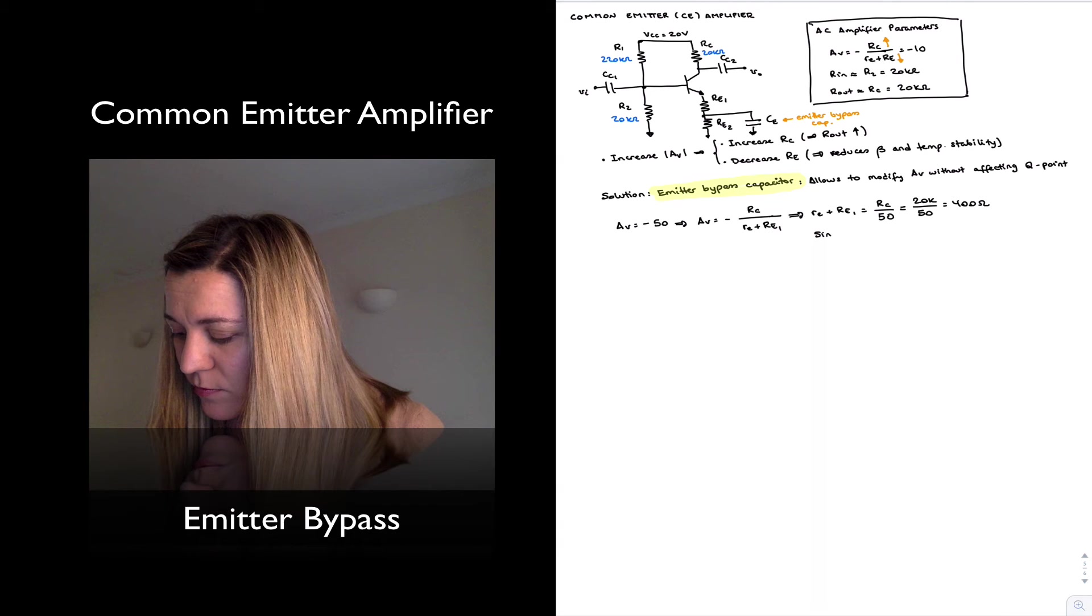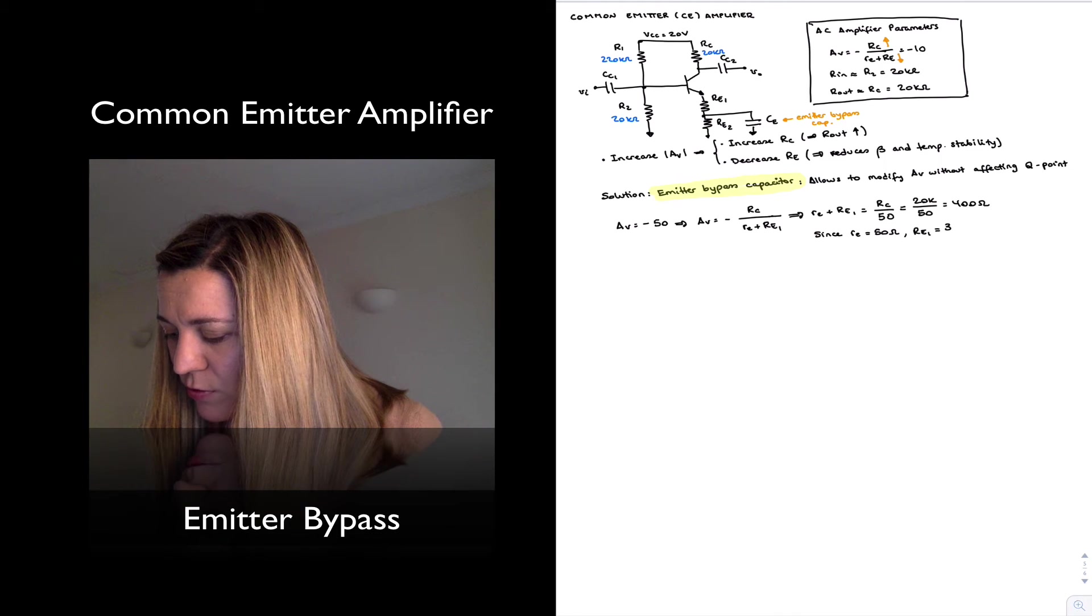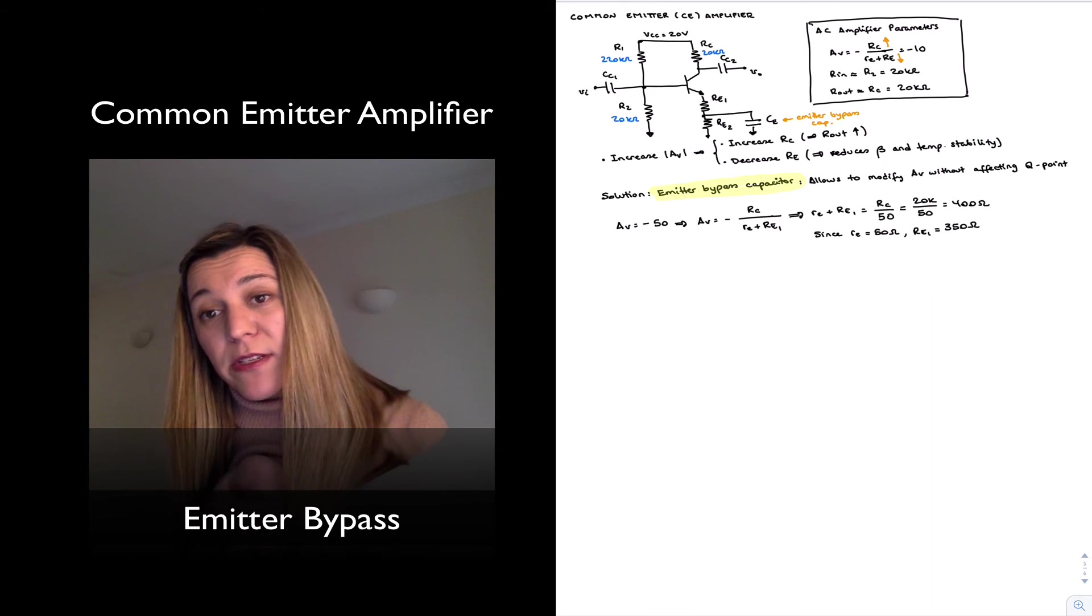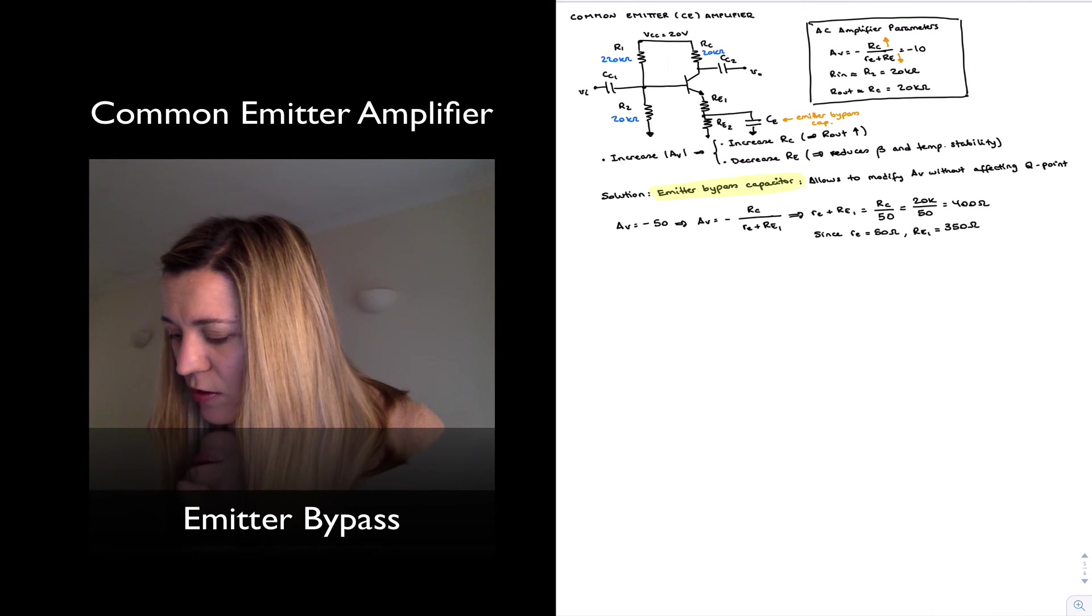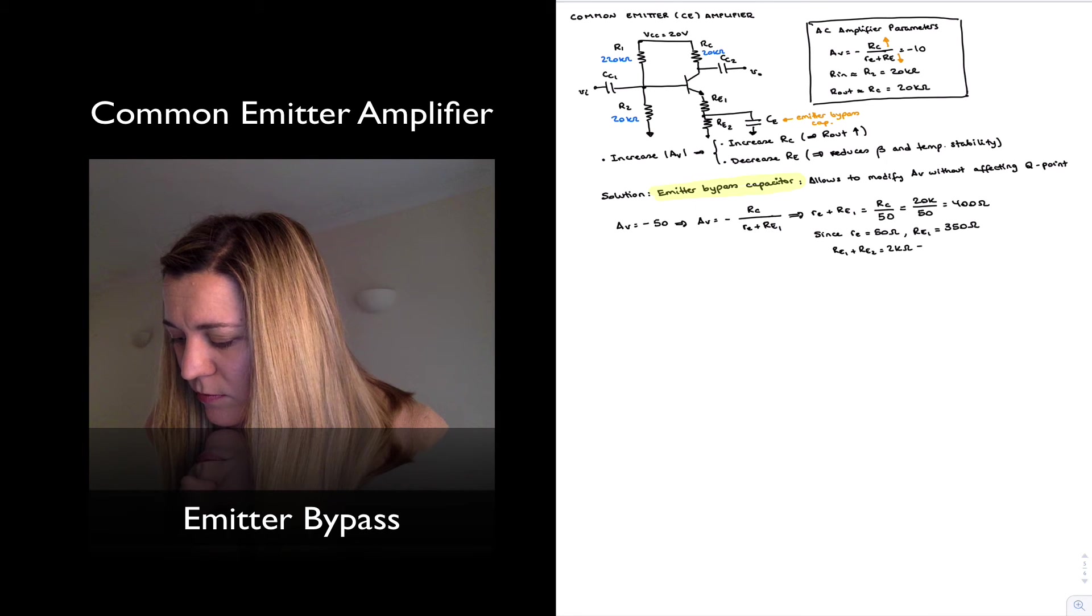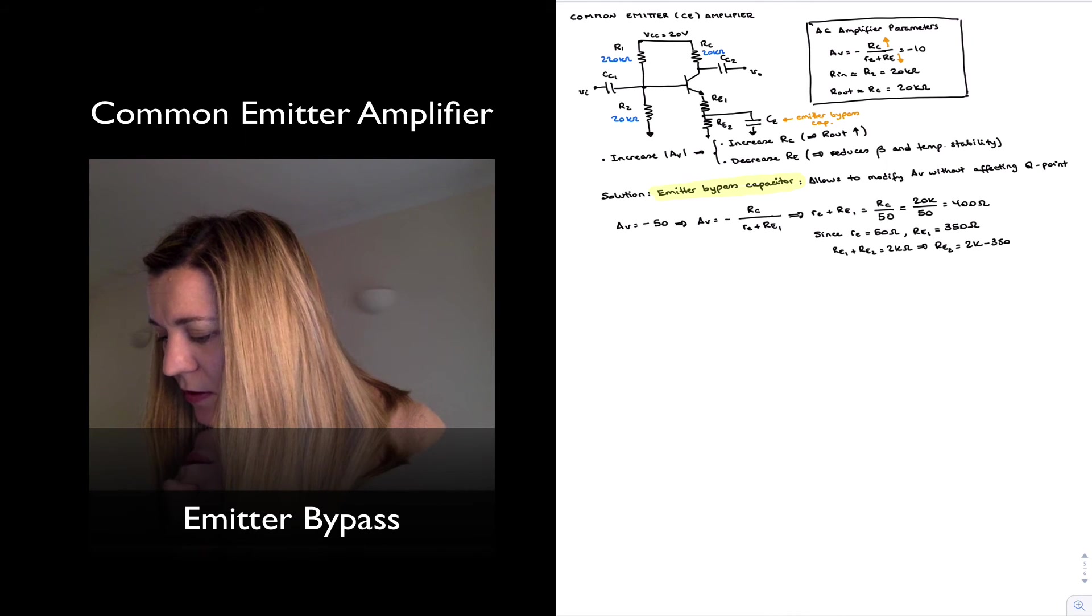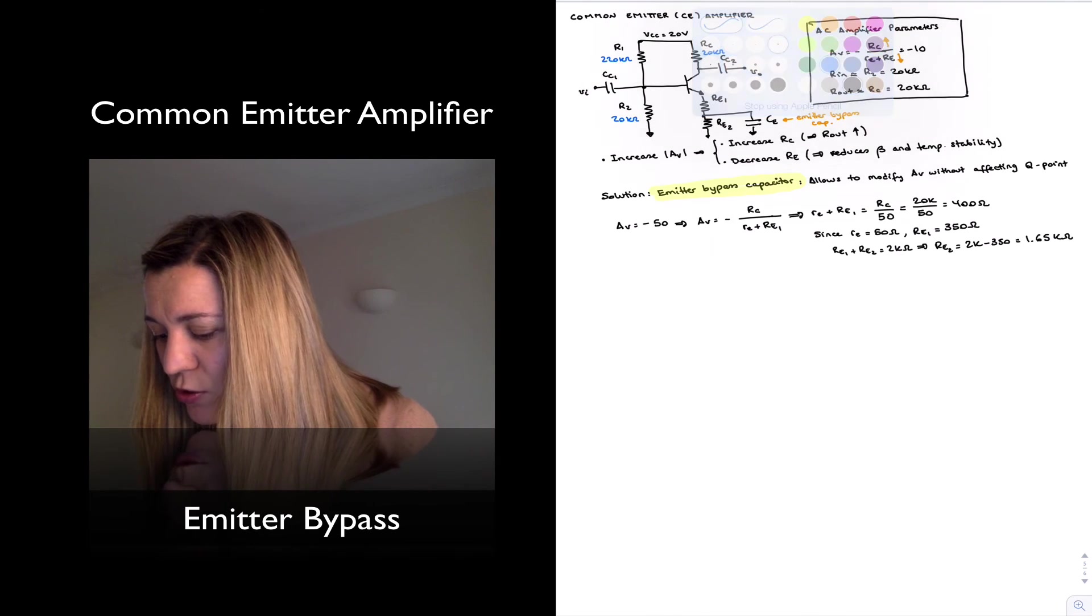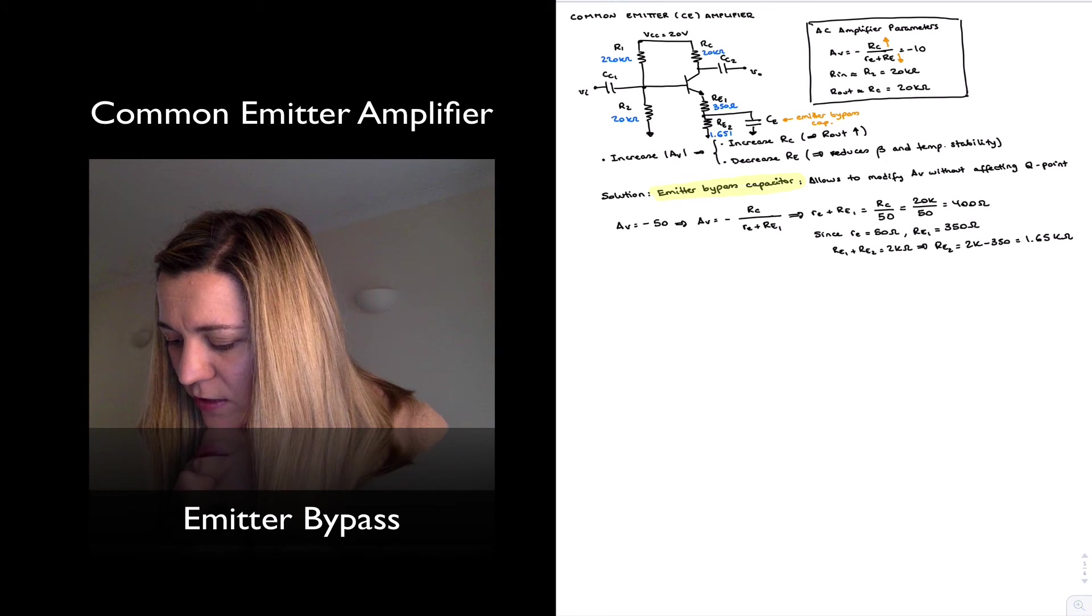And now RE1 plus RE2 needs to be equal to 2K, the original value of RE, and so RE2 must be equal to 2K minus 350, which is equal to 1.65 kilo ohms. So now I have assigned values to these two resistors. I have 350 ohms for RE1 and 1.65 kilo ohms for RE2.